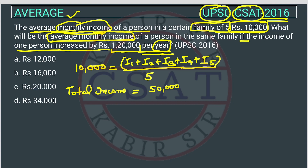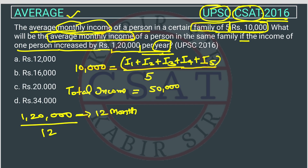Now what happened is that one person's income increased by 1,20,000 per year. One year means 12 months, so what is the salary increment for one month? We will divide 1,20,000 by 12, because this is the increment over 12 months. So this comes out to 10,000. So 10,000 is the increment per month.